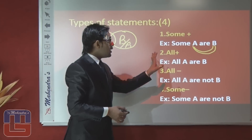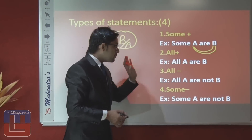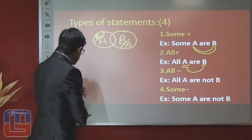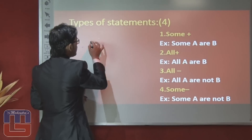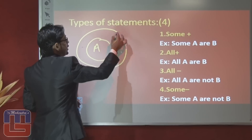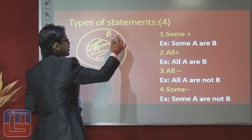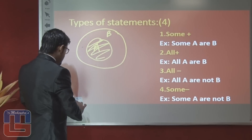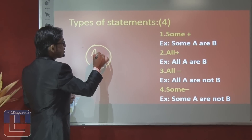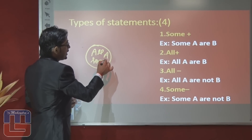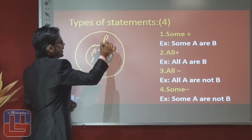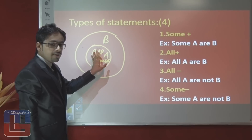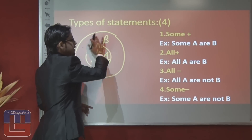Whenever you find a statement like 'all A are B,' it means all part of the first variable is within the circle of the second variable. The area where all A exists also has some B. If the statement is 'all A are B,' it means all the area of A is inside B and some area of B is already available here, but we cannot comment about the rest of the area of B.